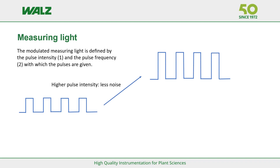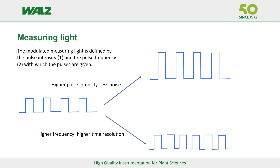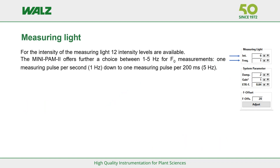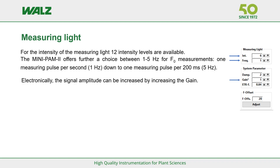If the pulse intensity is increased, signal noise will decrease. If the pulse frequency is increased, the time resolution of the measurement is increased. By adjusting pulse intensity and pulse frequency, it is possible to control the integrated light intensity. For the Minipam 2, twelve measuring light intensities are available. In the WinControl software, it is possible to choose between 1 to 5 Hz for F0 determinations — that is 1 pulse per second down to 1 pulse per 200 milliseconds. The signal intensity can also be increased by the gain, which increases both signal amplitude and noise but has no effect on integrated light intensity.